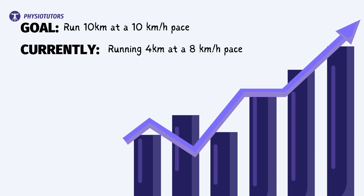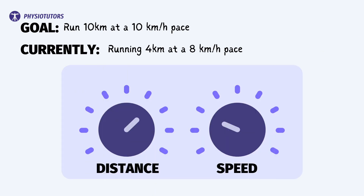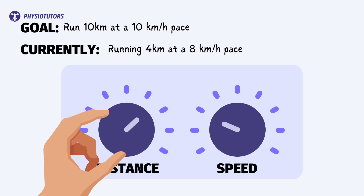If her pain also decreases back to baseline within 24 hours, then we know she can tolerate running 4 kilometers at a speed of 8 kilometers per hour. As a next step, we can further increase the distance in a stepwise manner until she reaches her goal. As a general guideline, I first try to increase mileage or running volume before increasing speed, and it is vital in rehabilitation that we increase only one variable at a time.